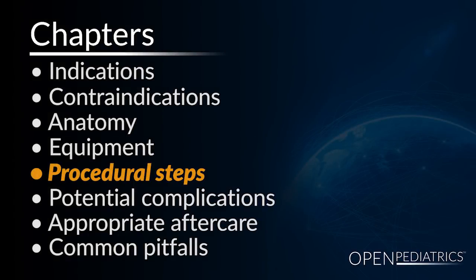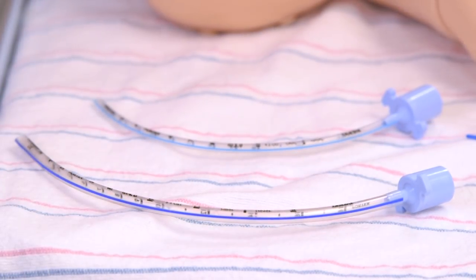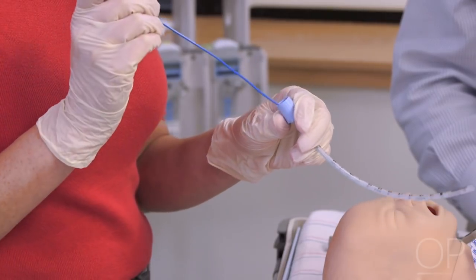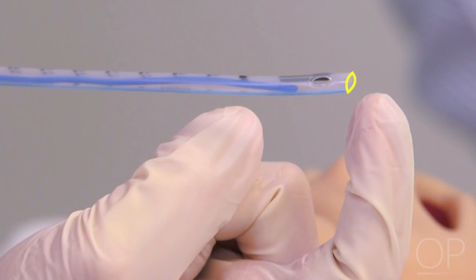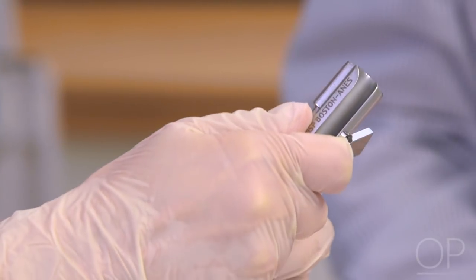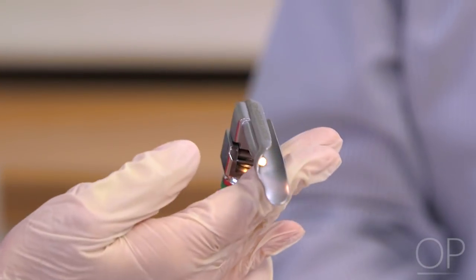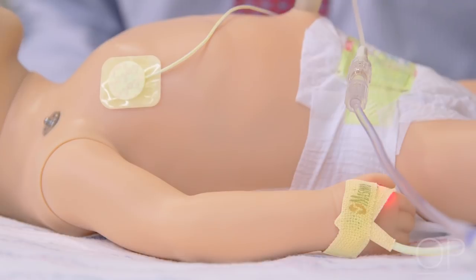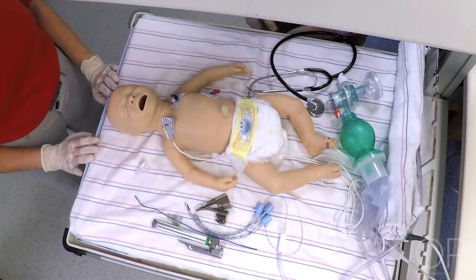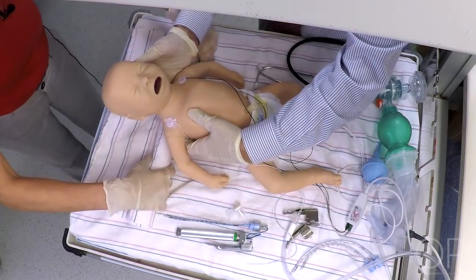Procedural Steps. The first step is to choose the appropriate size and type of endotracheal tube. The stylet should be inserted so that it is not protruding from either the end hole or Murphy's eye of the endotracheal tube. Next, equipment should be rechecked to ensure it is all readily available and in working order. The team should ensure that the patient has monitoring leads and a pulse oximeter in place. The patient should be appropriately positioned, utilizing proper head position, bed height, and a shoulder roll if indicated.